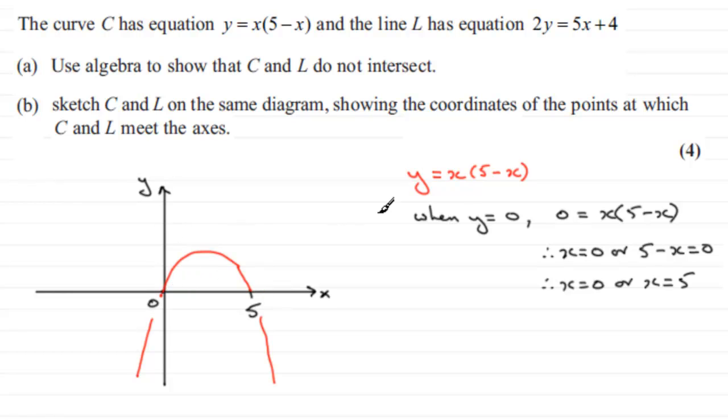Now we need to look at the other graph, the graph of L, the equation of the line. And we've got, for that one, we've got 2y equals 5x plus 4.